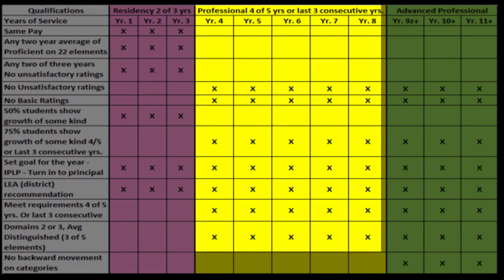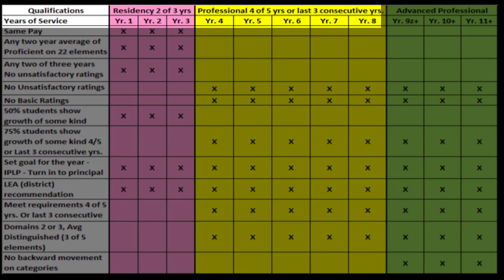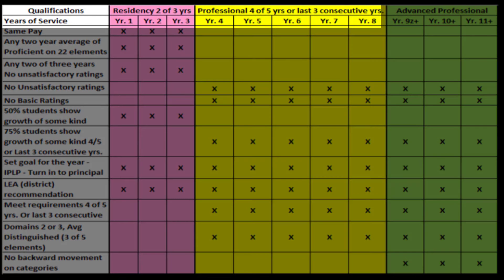After successful completion of the third year, the teacher moves to the professional level. The teacher must successfully complete the requirements in yellow for four of the five years, or they may qualify by successfully completing them the last three years in a row.